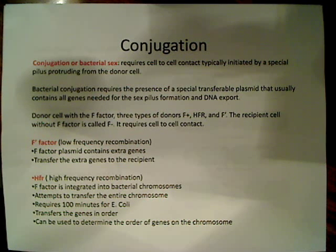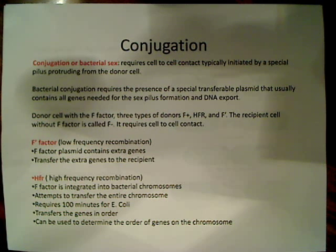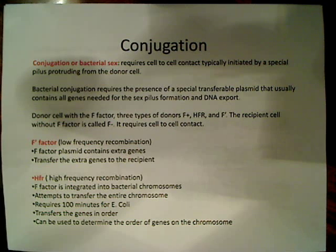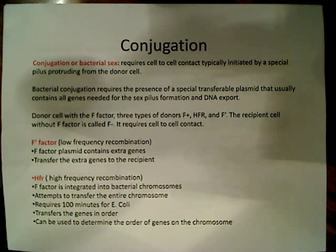I'm going to go over the specifics of what each one is and the crosses. In general, conjugation can only occur between a cell that has the F-factor plasmid and one that doesn't. So it can't occur between two F-plus cells. It can only occur between F-plus and F-minus, or HFR and F-minus, et cetera.